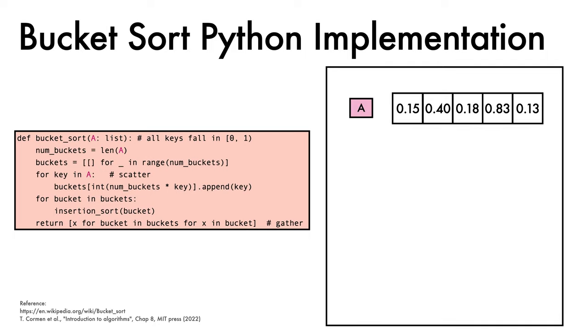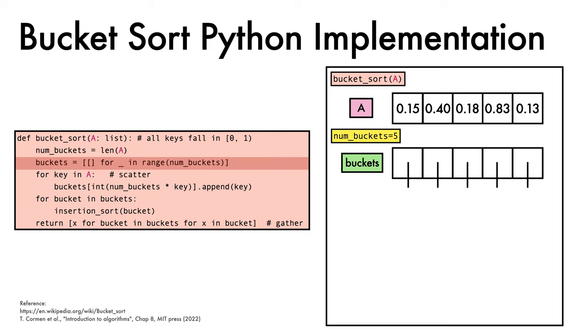We'll take a look at this function in action on an example array of five elements. We call our function and compute the number of buckets, which here is 5, the length of the array. Next, we initialize our list of empty buckets.